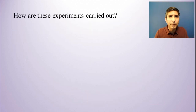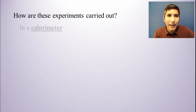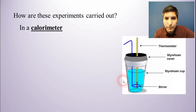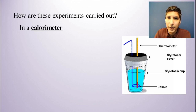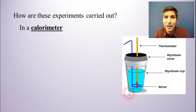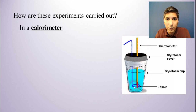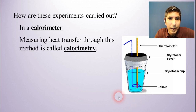When we talk about these experiments, you might wonder how we carry them out. These experiments are carried out in a little object called a calorimeter. A calorimeter essentially looks like this: we have a cup and we try to use some sort of insulating material. The best and cheapest insulating material is polystyrene, or what most people call styrofoam. So you have a styrofoam cup with a cover on it — this kind of looks like a coffee cup, so sometimes we call this a coffee cup calorimeter. We just stick a thermometer in the top and perhaps a stirring object, and when we measure heat transfer through this method, it's called calorimetry.